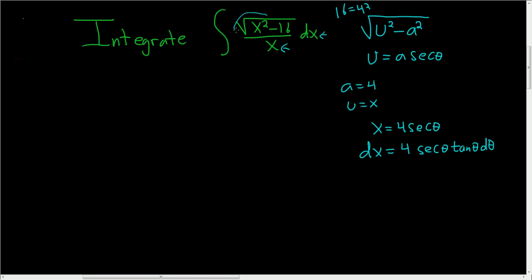Now let's rewrite this piece. This is the square root of x squared minus 16, which equals the square root of, well x is 4 secant theta, so squaring both pieces gives 16 secant squared theta minus 16.